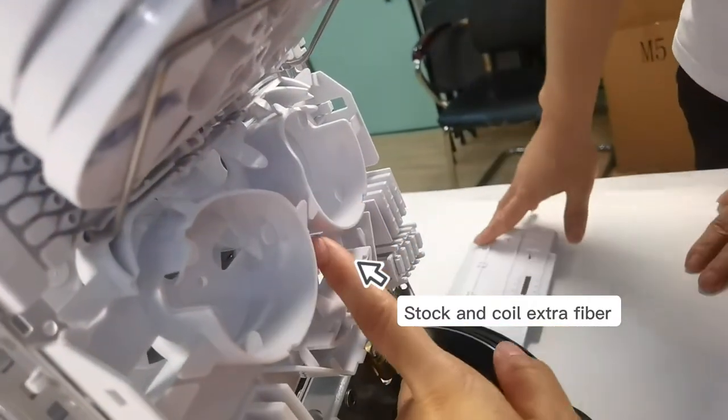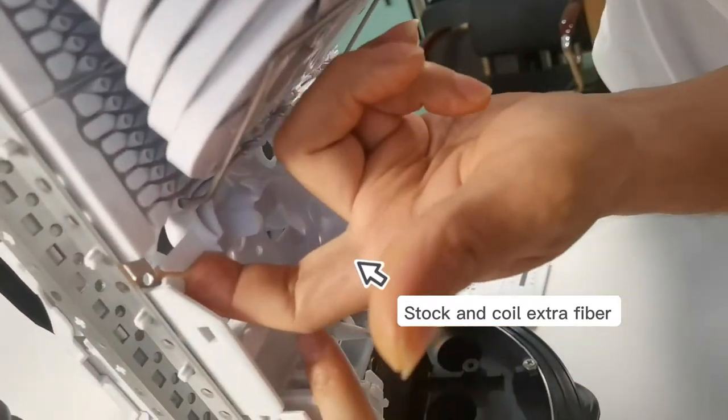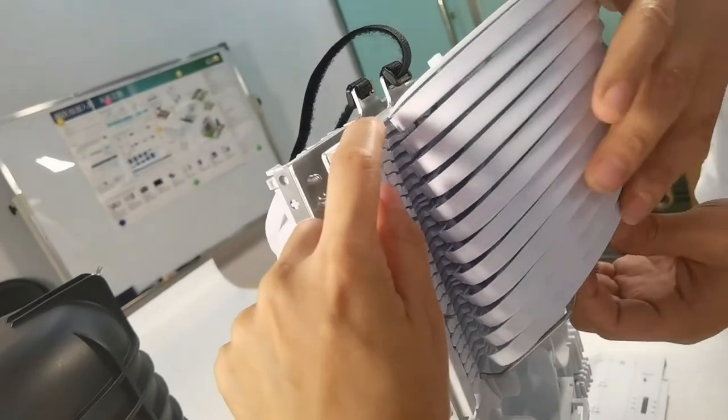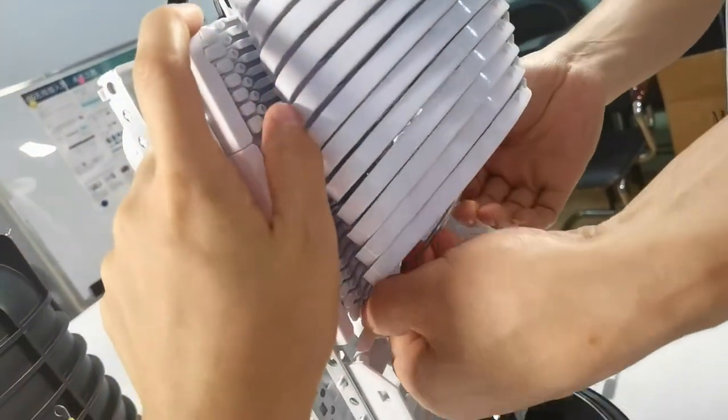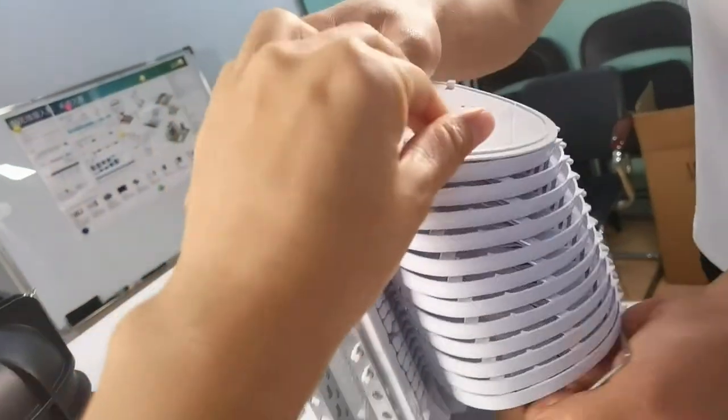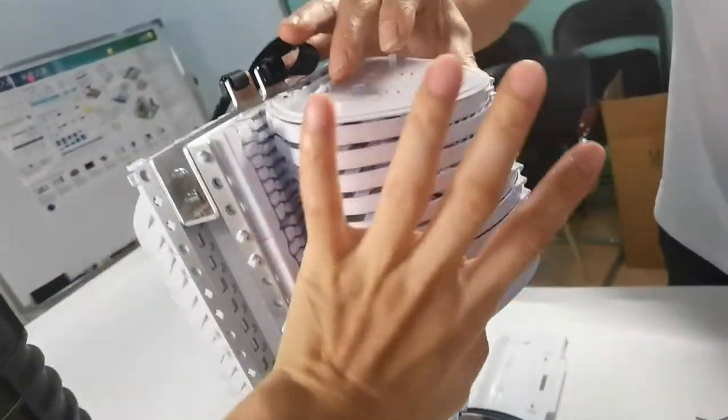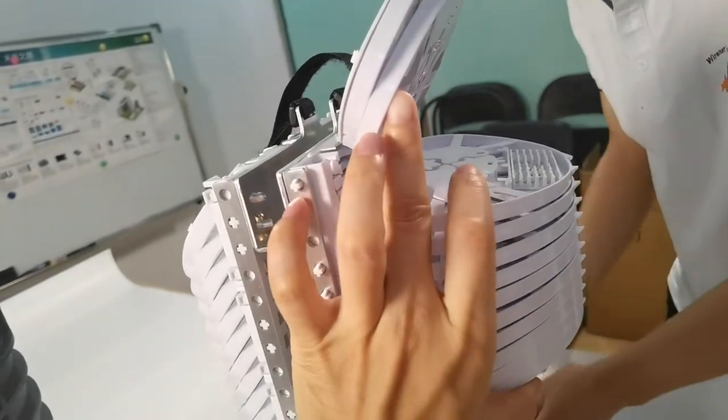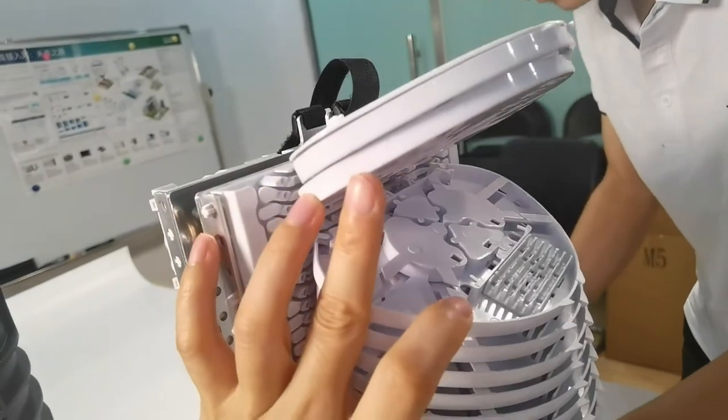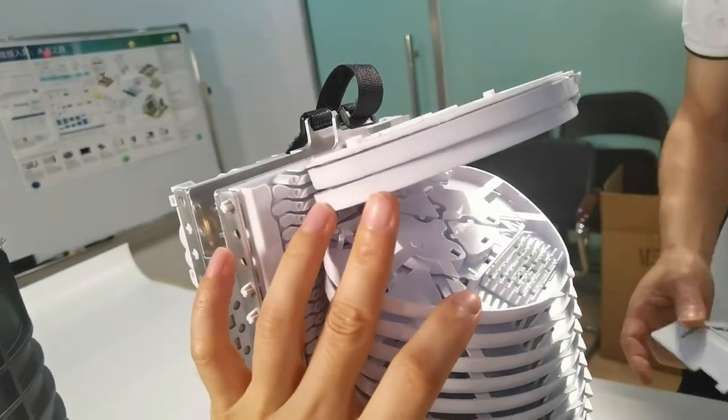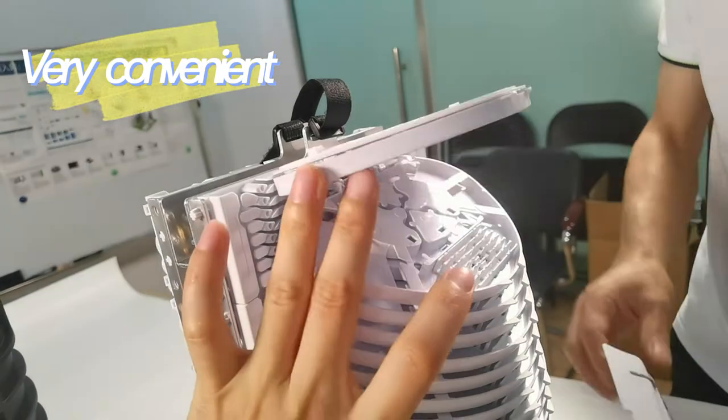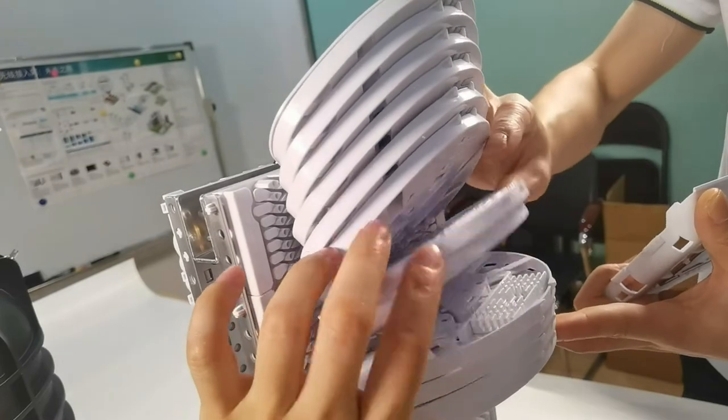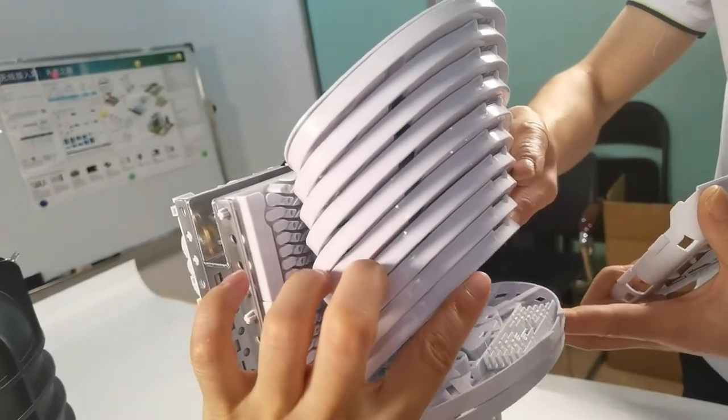Coil the extra fiber here. Stock the fiber for cable management here. This splash tray supports more convenient fiber splicing. This is a high density splice tray. It's flexible, so it's very convenient for workers to do the splicing.